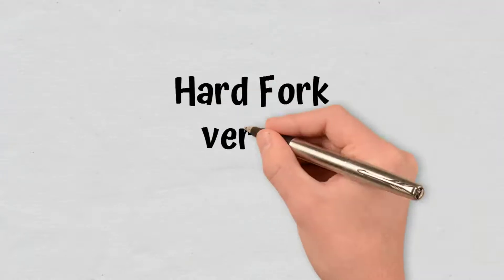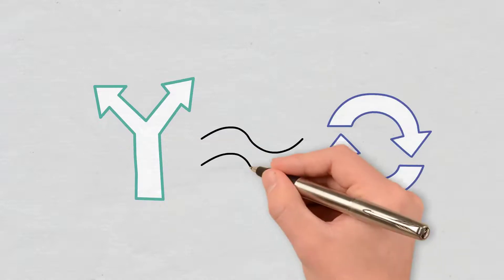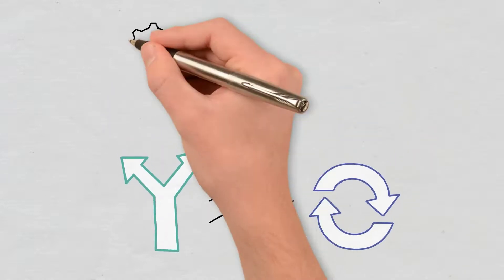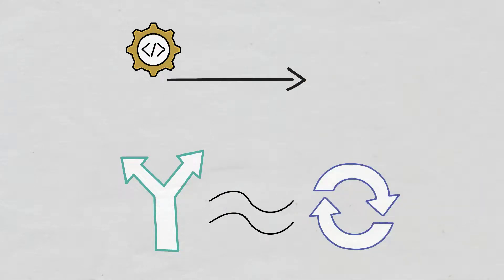Hard Fork vs. Soft Fork. Hard forks and soft forks are similar, in the sense that when the existing code of a platform is changed, the old version remains on the network as the new one makes its debut.